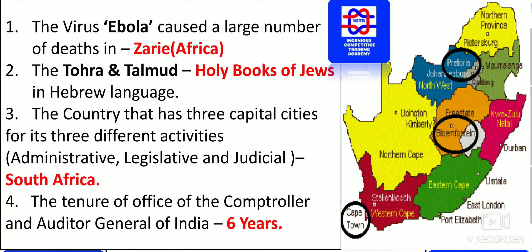The Torah and Talmud are the holy books of Jews, written in the Hebrew language. We have to remember what the holy books of Jews are.